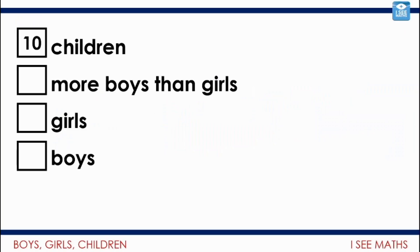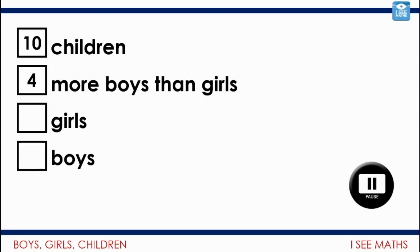Here's the first challenge. 10 children at a party — remember when we could all join up and go to parties? 4 more boys than girls at the party. How many girls and how many boys? Pause the video, use your counters that you've got, see if you can find the answer. How many girls will there be? How many boys will there be? How can you show that? Pause the video.